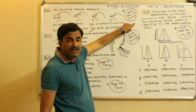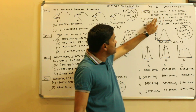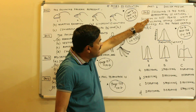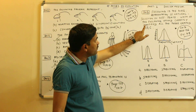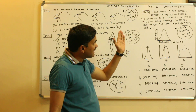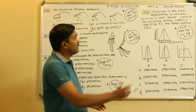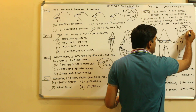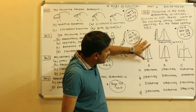Question number five is very important and is asked many times: the following is a diagrammatic representation of natural selection on different traits. Which of the following options correctly identifies all three graphs A, B, and C? This question is from chapter 7, evolution, page 136, figure 7.8 of NCERT.